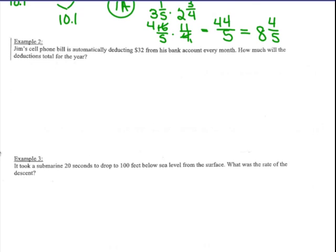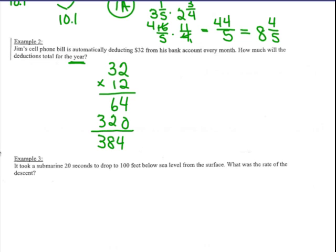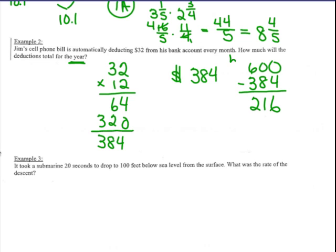Jim's cell phone bill automatically deducts $32 from his bank account every month. There are 12 months in a year. How much would the total deductions be for the year? 32 times 12 equals $384, so $384 is deducted. A Part B might say the account started with $600 — subtract $384 and $216 would be left. Deductions are taken out — it's like taking money out of your account.